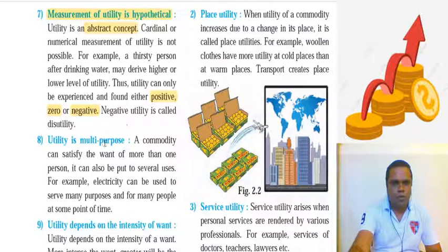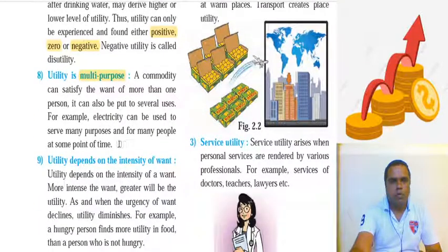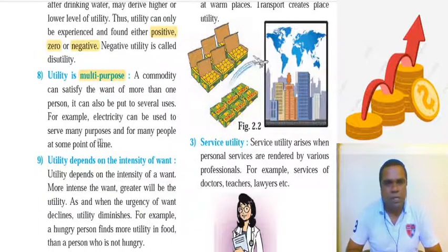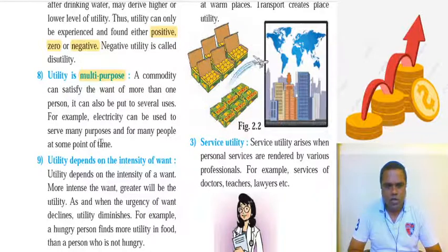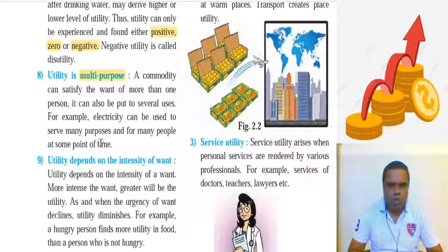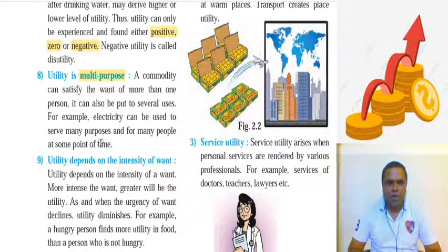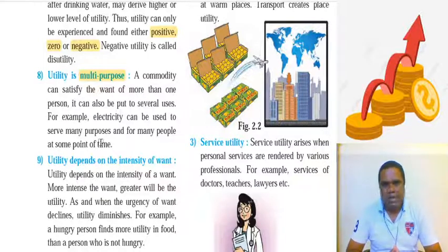Point number eight: utility is multi-purpose. Multi-purpose means that a single commodity satisfies more than one want. For example, electricity — you can make an endless list: for lighting, computers, charging, laptops, fans, geysers, washing machines, fridges, and everywhere. A single commodity satisfying more than one want is called multi-purpose utility.